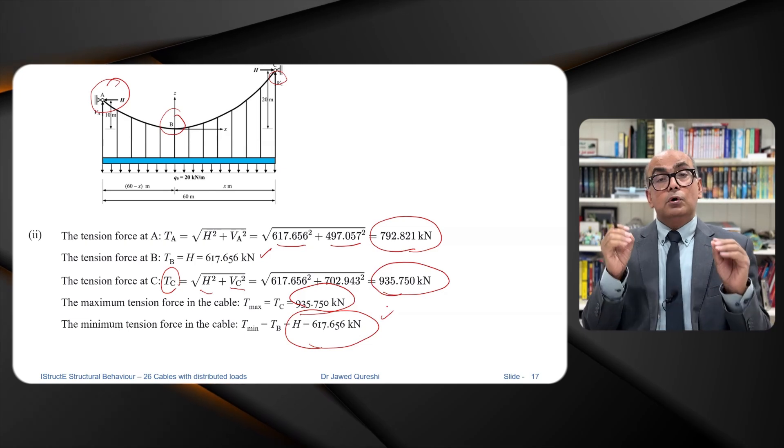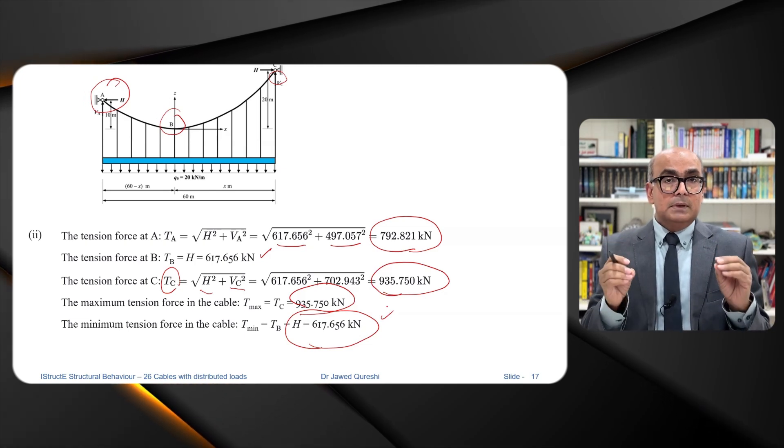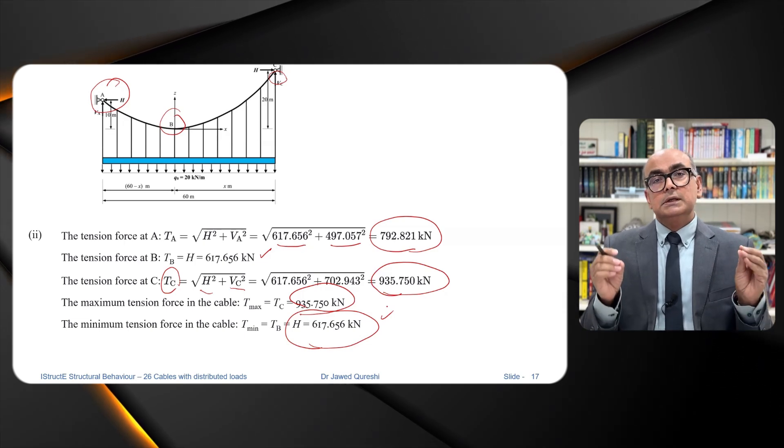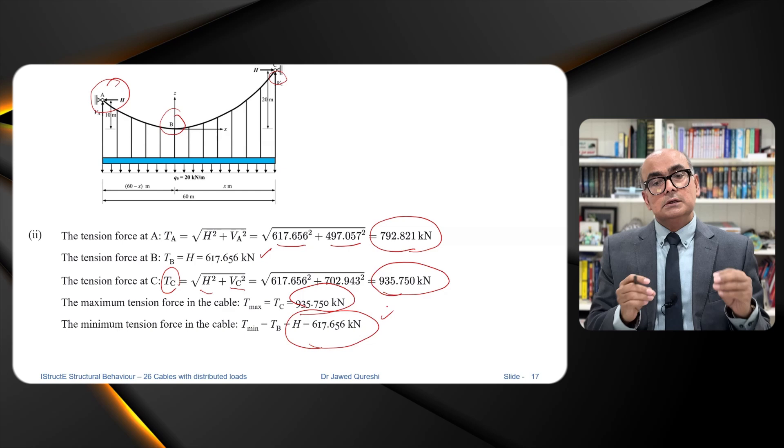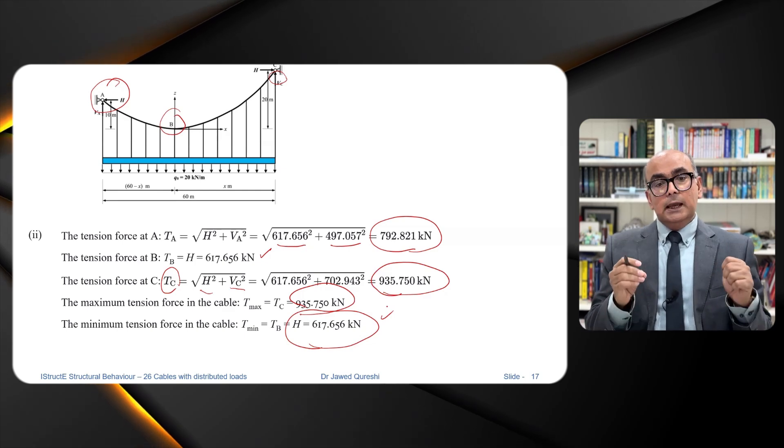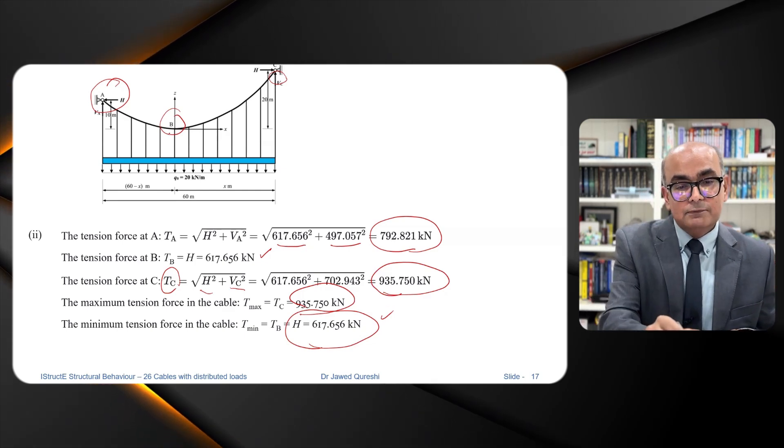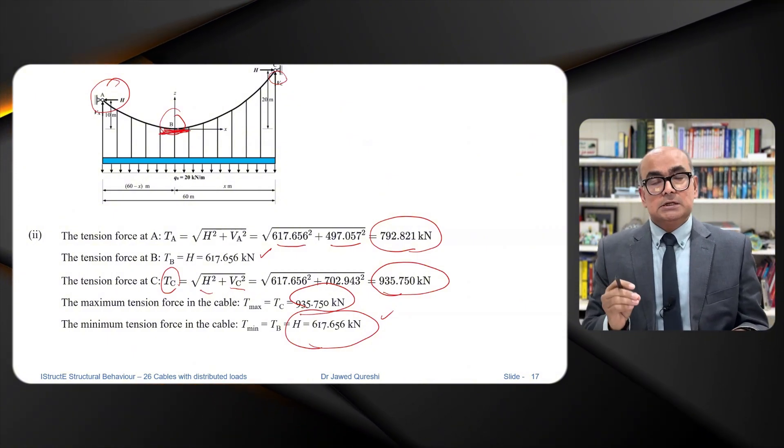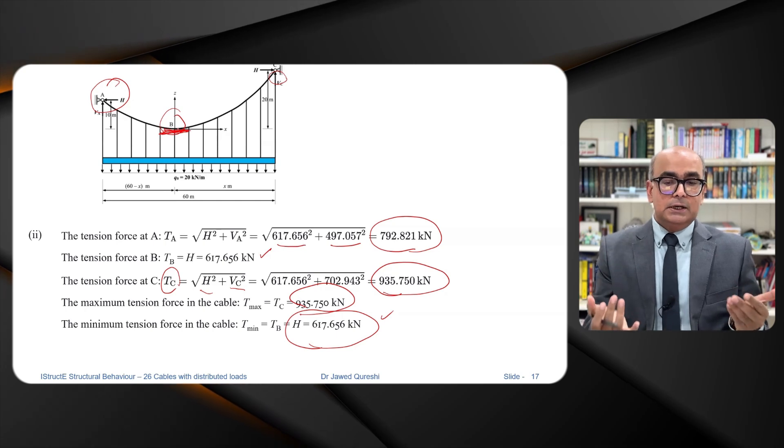Remember that horizontal force remains constant all the way through the cable. The only thing which is changing here is the vertical reaction and at a point where we have zero angle we will always have minimum tension because there is no vertical component at all.